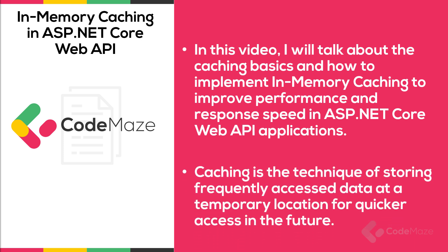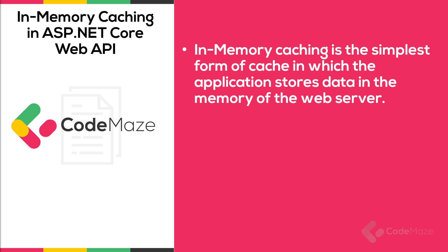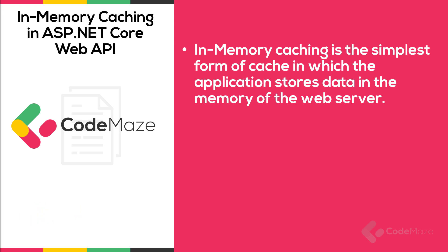Caching is the technique of storing frequently accessed data at a temporary location for quicker access in the future. This can significantly improve the performance of an application by reducing the time required for connecting with the data source and sending data across the network. One type of caching available in .NET apps is in-memory caching. It is the simplest form of cache, in which the application stores data in the memory of the web server. This is based on the IMemoryCache interface, which represents a cache object stored in the application's memory.